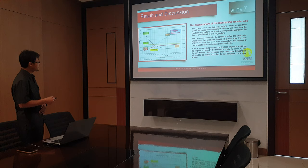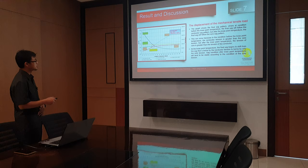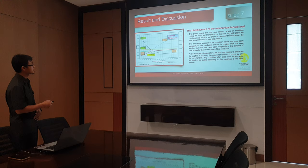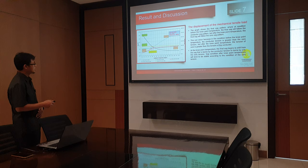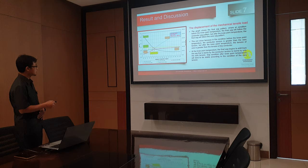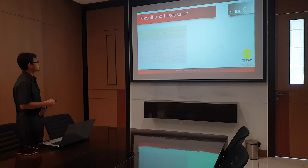The displacement of the mechanical load — the aluminum conductor shown in red color — and the final sag pattern: where the condition before the Knee Point Temperature, the final sag will follow the conductor sag pattern, the conductor tension. But after the Knee Point Temperature, the final sag follows the core pattern. At the Knee Point Temperature, the final sag begins to shift from the sag that is governed by the conductor tension to governed by only the core tension.